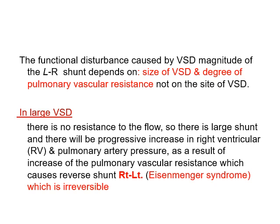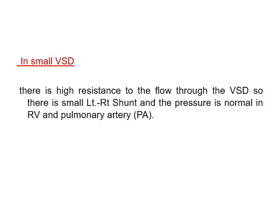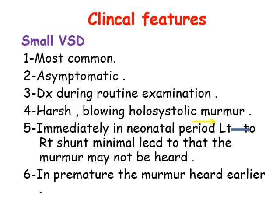In small VSD, there is high resistance to flow through the defect, so there is a small left-to-right shunt and normal pressure in the right ventricle and pulmonary artery. Clinical features depend on the size of the defect. Small VSD — most common — is usually asymptomatic, discovered during routine examination. On auscultation, a holosystolic murmur is heard.